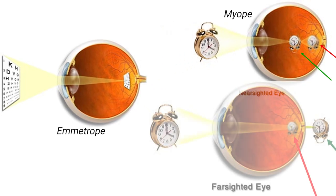Someone who is farsighted is hyperopic. This results from the eyeball being too short, the optics not strong enough, or both. In emetropia, the image is correctly focused at the back of the eye. In myopia, the image is in front of the retina. In hyperopia, the image would be focused behind the retina, but it kind of gets blocked by the retina itself. Experientially, the person has a hard time getting close stuff to focus, but further away is fine. Their corrective lenses add focusing power, so it would have a positive diopter.